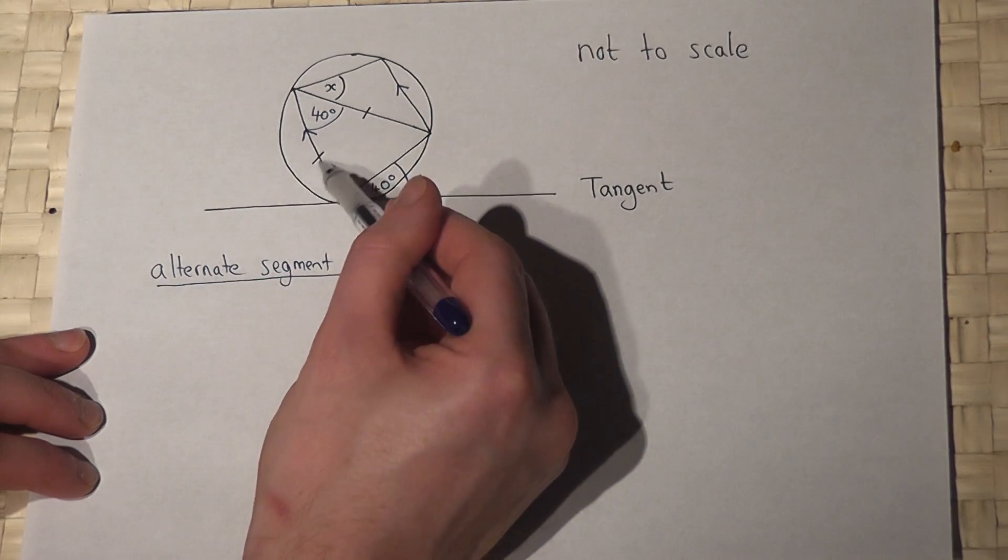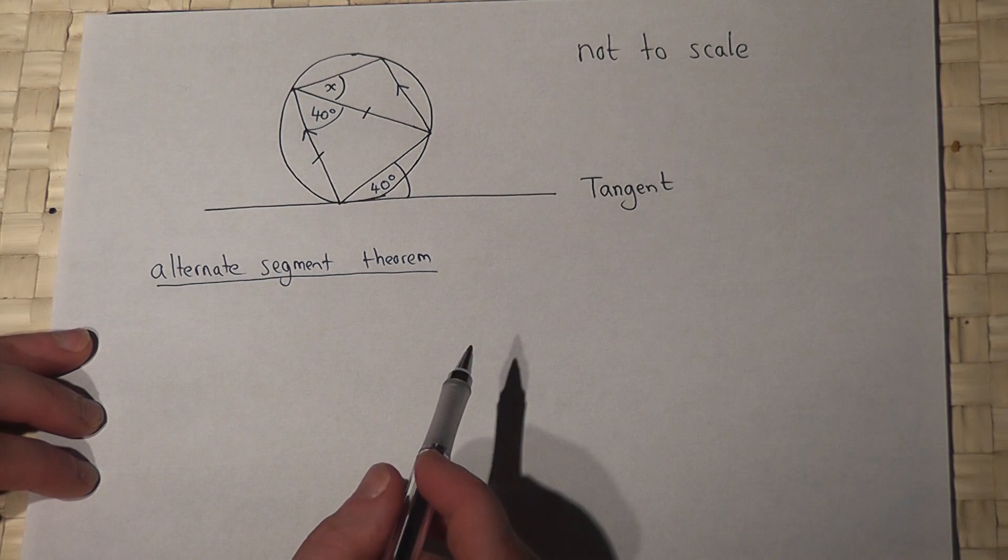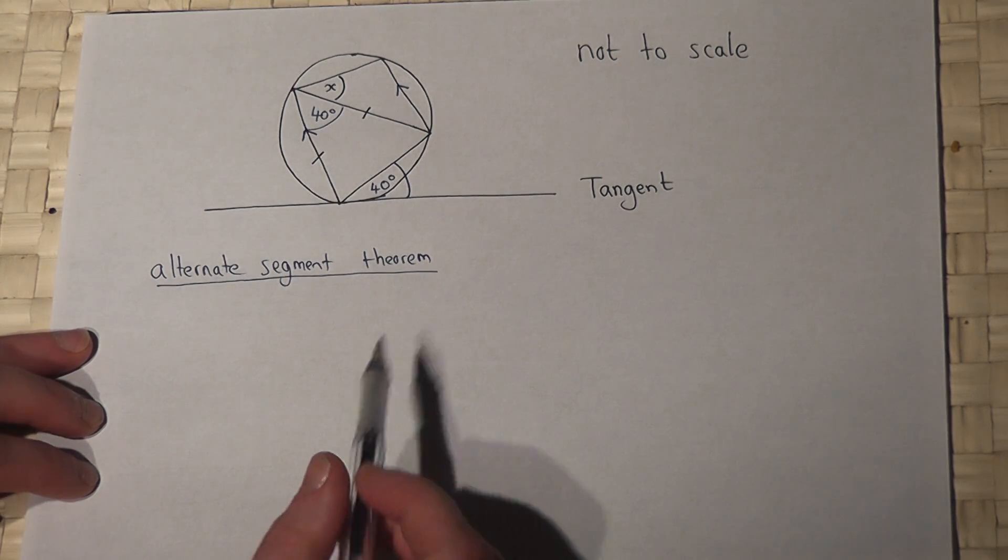If we knew that angle there, that would be the same as this one here. We can therefore find out another angle.